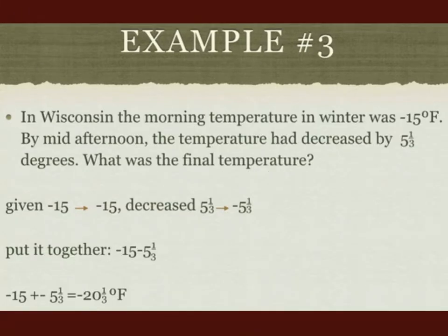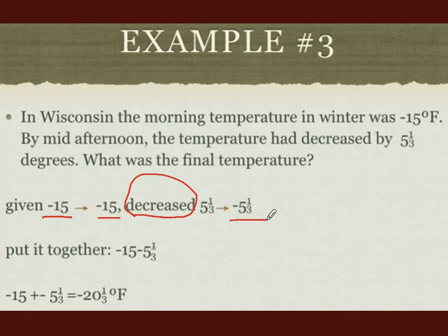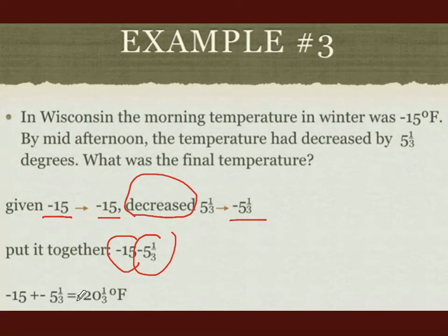In Wisconsin, the morning temperature in winter was −15 degrees Fahrenheit. By mid-afternoon the temperature had decreased by 5 and one-third degrees. What was the final temperature? What do we know: in the morning it's already −15. The word 'decrease' indicates a negative number, so it's minus 5⅓ degrees Fahrenheit. Putting it together: −15 minus 5⅓. Both are negative, so same signs add: −15 + (−5⅓) = −20⅓ degrees Fahrenheit.